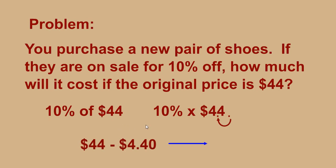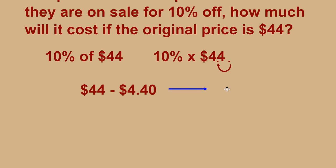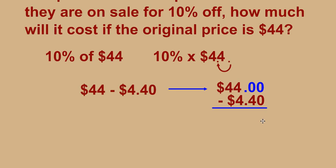Next, we subtract $4.40 from $44 to find how much we're actually paying. When setting up the subtraction problem, line up your decimals and add zeros. We need to borrow: the 4 becomes a 3, giving us 10 dimes, and we borrow again as needed. Our final answer is $39.60. Using the 10% rule can really save you time.